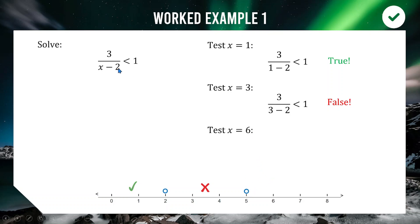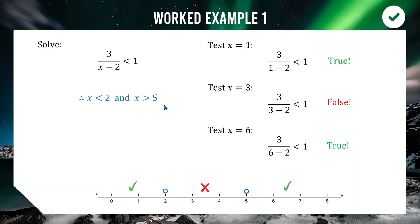Testing x = 6 (greater than 5): substituting gives 3/(6 − 2) = 3/4, and 3/4 < 1 is true. So values greater than 5 are included. The final answer is x < 2 or x > 5. Find your critical values, test some points, and figure out where your solution is — it works every time.